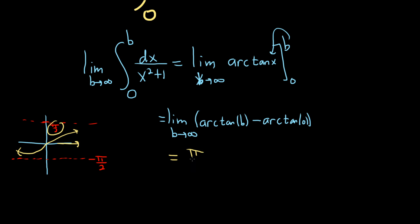So it'll be π over 2 minus, and then the arctangent of 0 is 0. So we get π over 2 minus 0, so we get π over 2.